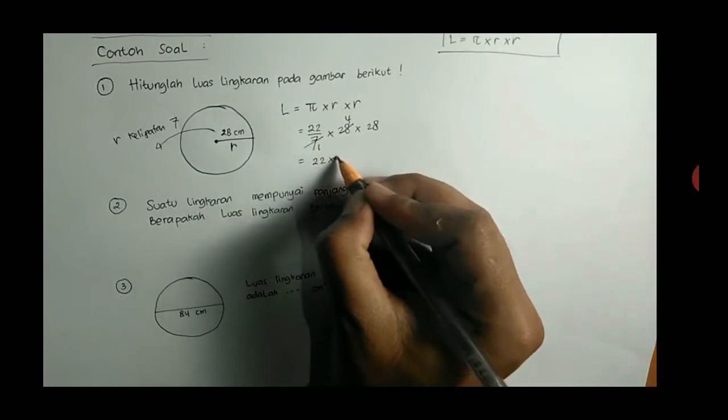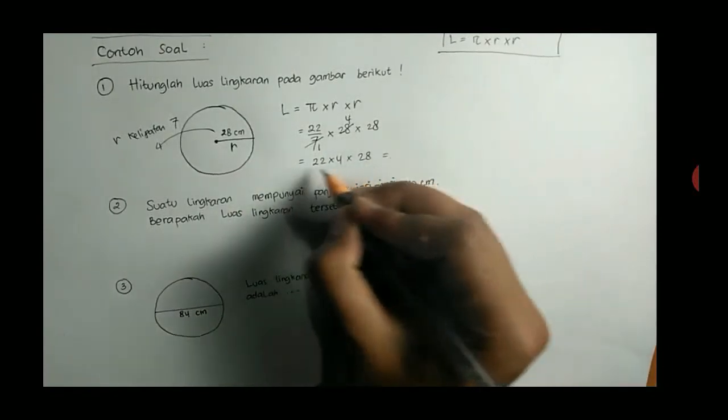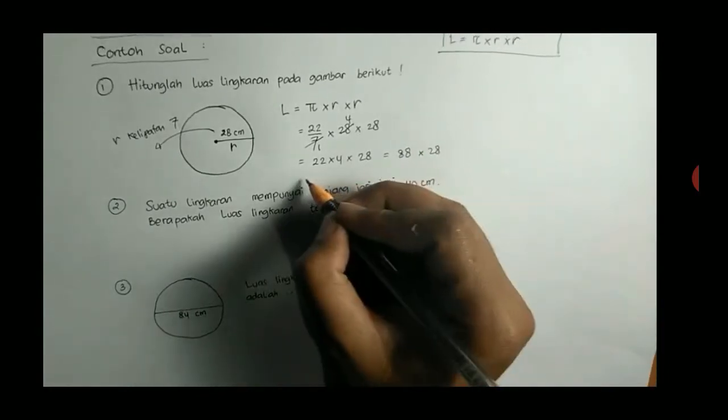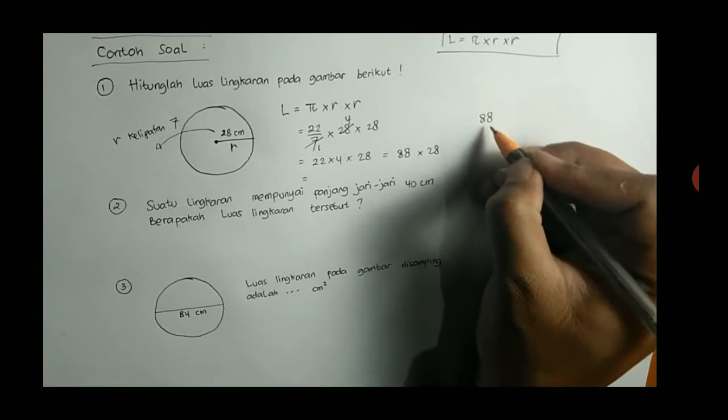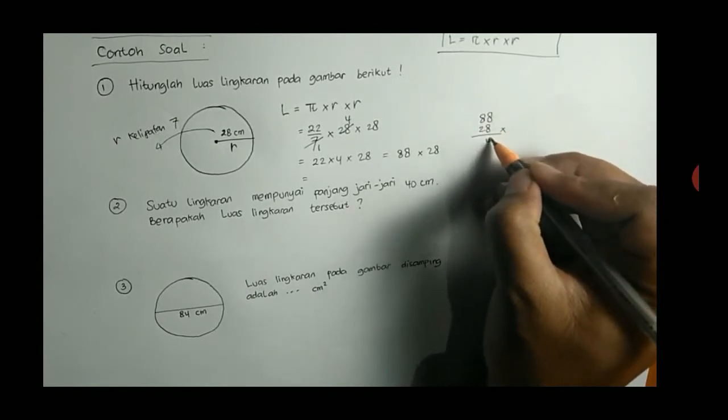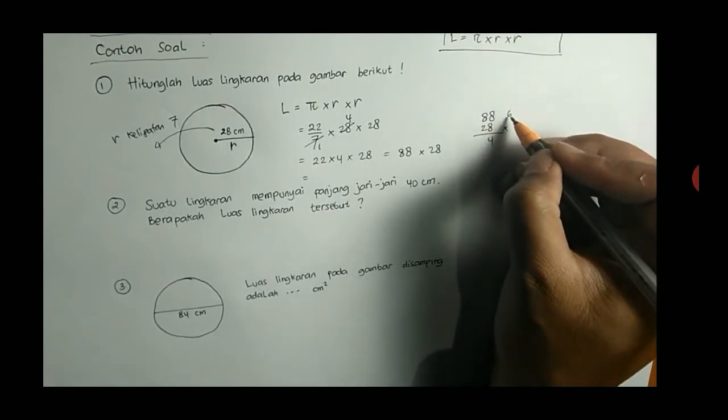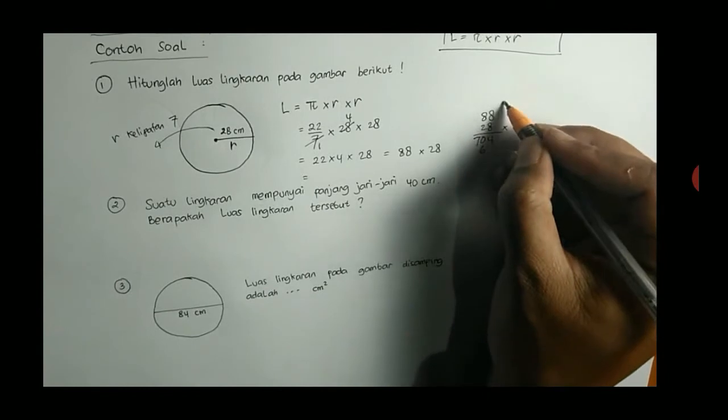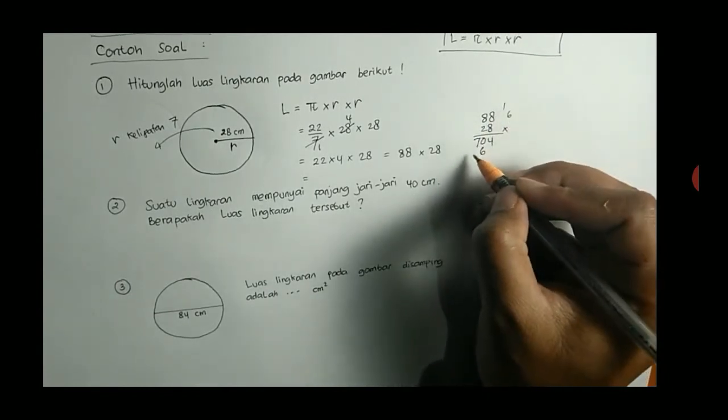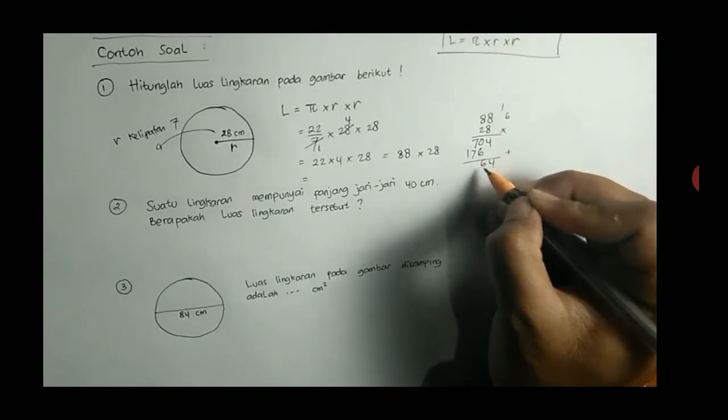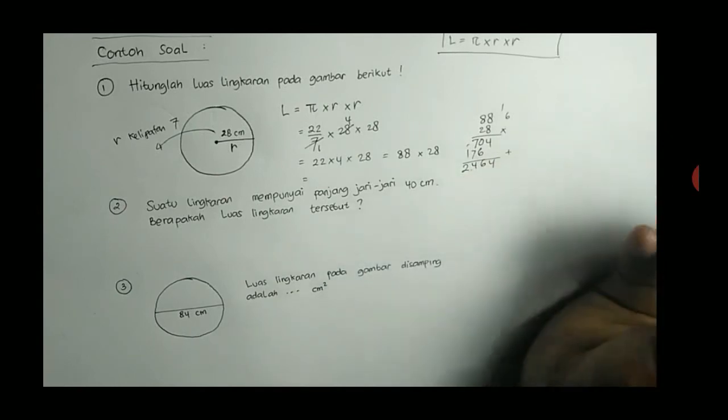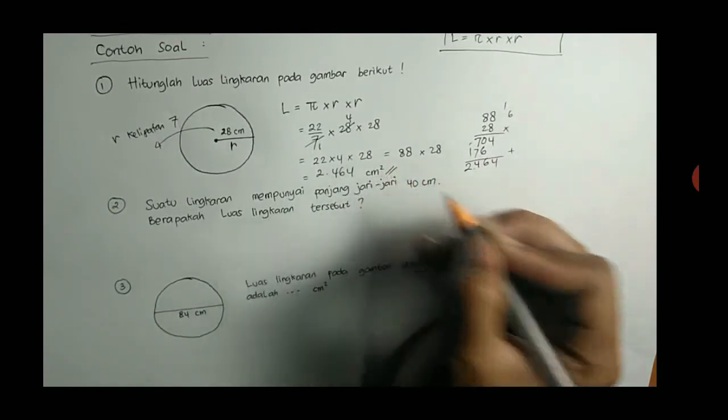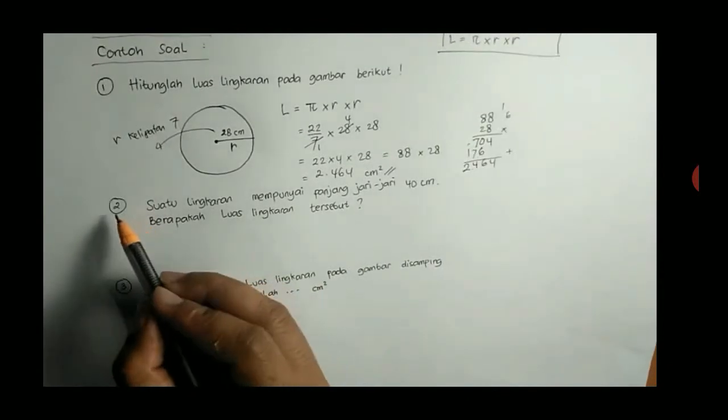Sehingga 22 kali 4 itu 88, dikali 28. Saya kira ini kalian sudah bisa, perhitungan bersusun perkalian biasa, 28 dikali 88. Perkalian, jadi dilatih, kalian harus, keterampilan menghitung juga harus cepat, perkalian. Ini hasilnya adalah 2464. Jadi luas lingkaran pada gambar adalah 2464 cm persegi.